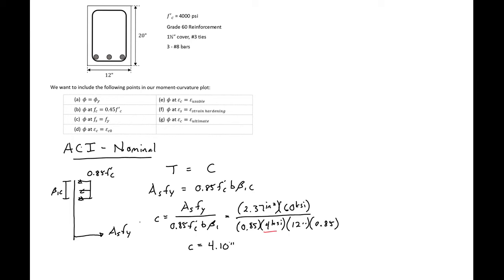Using our c, we can now calculate our moment. Remember our nominal moment is going to be equal to our tension force, ASfy, times our lever arm, which will be d minus beta1c over 2. We know our AS is 2.37 square inches.